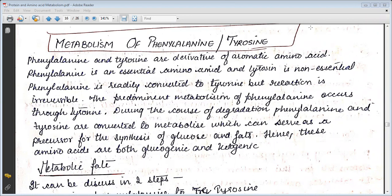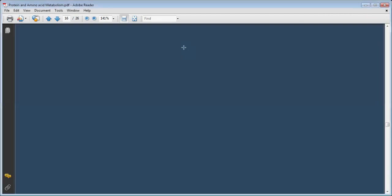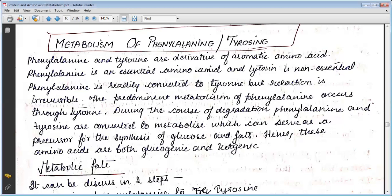Phenylalanine is regularly converted to tyrosine, but the reaction is irreversible. The predominant metabolism of phenylalanine occurs through tyrosine. During degradation, phenylalanine and tyrosine are converted to metabolites which can serve as precursors for the synthesis of glucose and fat. These amino acids are both glucogenic and ketogenic.